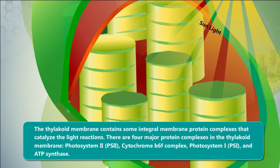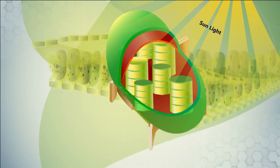In the thylakoid membrane, these are photosystem II (PSII), cytochrome b6f complex, photosystem I (PSI), and ATP synthase.